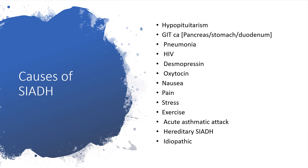Other triggers include nausea, pain, stress, exercise, acute asthmatic attack, and of course hereditary factors — some people inherit what their parents would have inherited from their parents also. That is hereditary syndrome of inappropriate antidiuretic hormone.